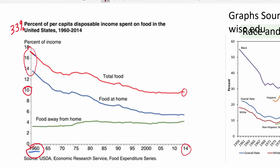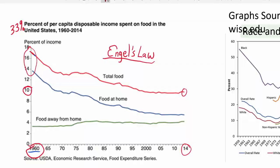This observation — that as people in an economy get more income, the percentage of their budget spent on food goes down — is called Engel's Law, named after the economist Engel who first observed this.